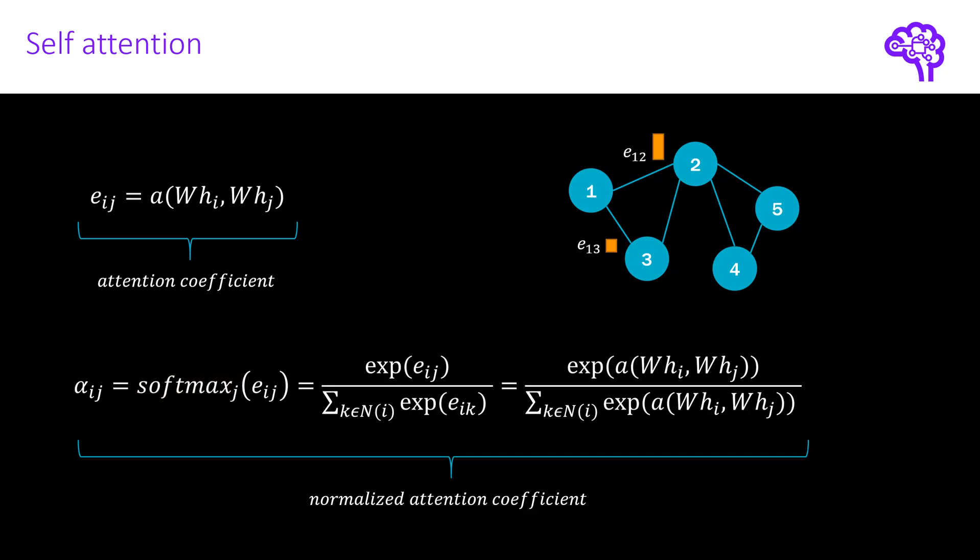The softmax function makes the values sum up to 1. So for node 1, we would now for instance have 0.8 and 0.2. We calculate the softmax function as fraction between e to the power of the attention coefficient between two specific nodes divided by the sum of this expression for all neighbors. These normalized values are then denoted with alpha.